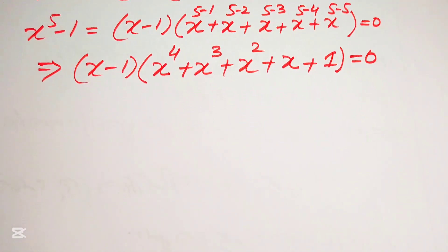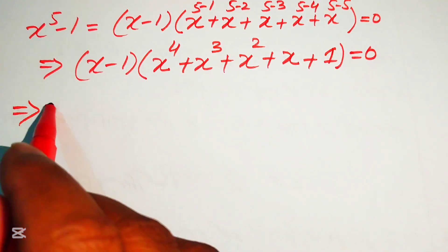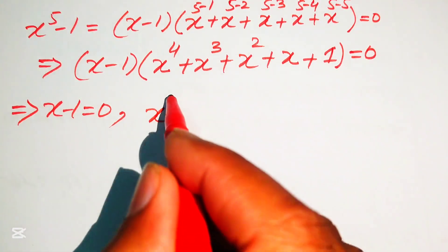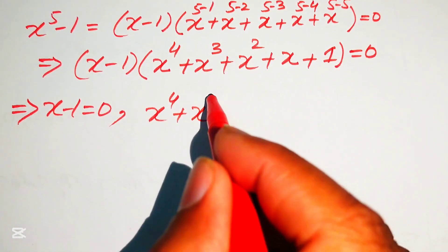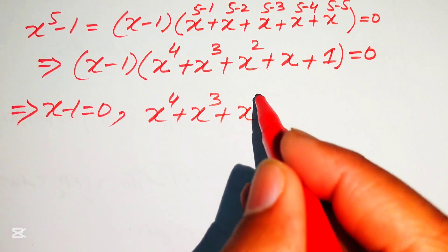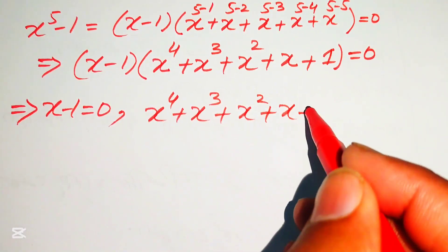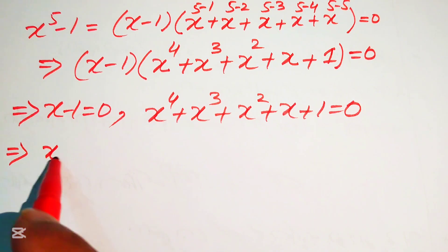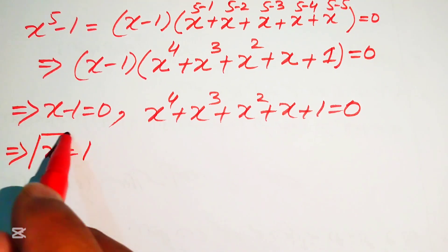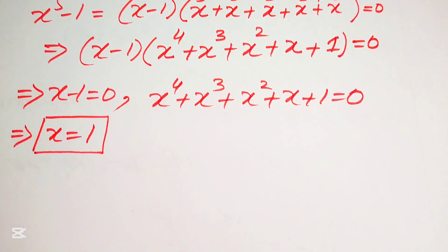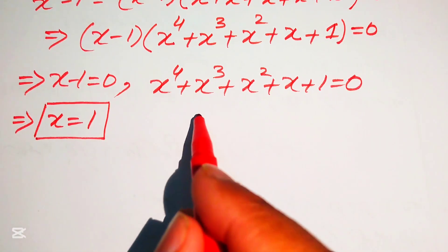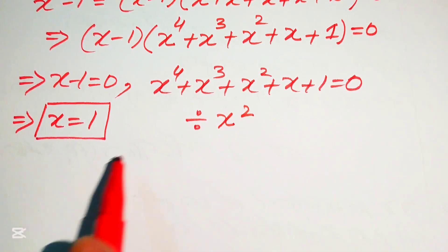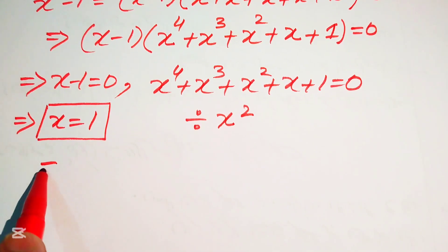We divide this equation into two cases. The first case is x minus 1 equals 0, and the second case is x to the power of 4 plus x cubed plus x squared plus x plus 1 equals 0. From the first case we easily get x equals 1, which is the first root. To find the other roots we divide this equation by x squared on both sides.